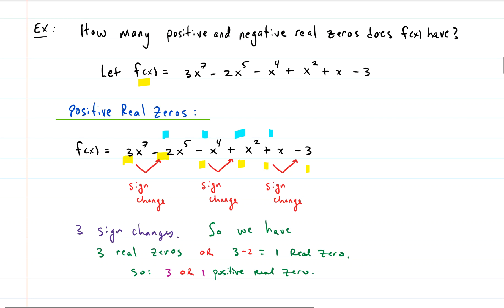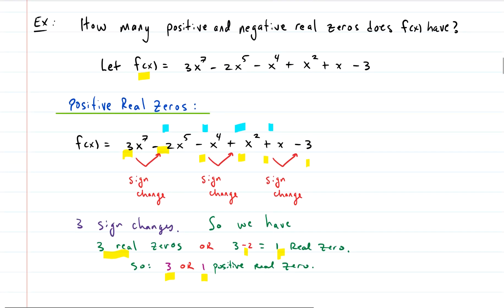So we have either three real positive zeros, or we subtract two from that — three minus two is one — so we either have three or one positive real zero. We don't know which one it is yet, but we know it's one of those. This is a seventh degree polynomial, so we know we have a total of seven zeros or solutions. Some of those may be imaginary and may not actually be x-intercepts, but we know we have three or one positive real zeros.